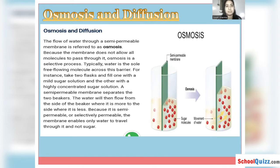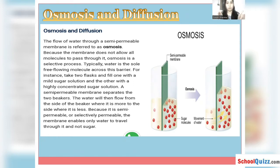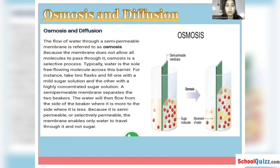First of all we will discuss the process of osmosis. Osmosis basically is the flow of water through a semi-permeable membrane. Before knowing how osmosis works, we should know what a semi-permeable membrane is. A semi-permeable membrane is a membrane which permits only selective substances through it. Only a selective amount of a substance will be able to pass to the other side of the solution. The flow of water through a semi-permeable membrane is known as osmosis, and because the membrane does not allow all molecules to pass through it, osmosis is a selective process.